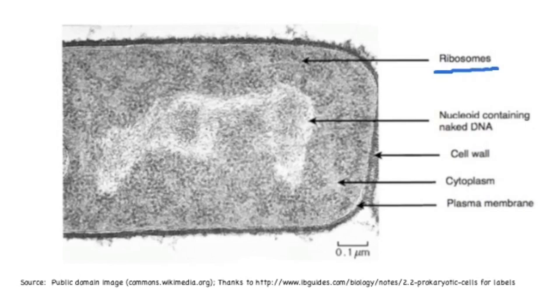Next you have the nucleoid region, which is lighter and irregularly shaped towards the middle of the cell. The cell wall is going to be a boundary or a dark line that's closest to the outside of the cell.